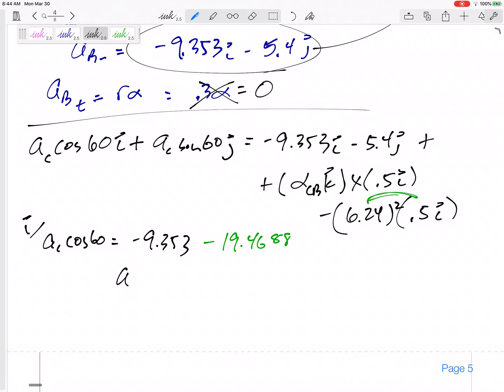There we go. So I can get A, C is negative 57.64 meters per second squared. And then my J equation, A, C, sine 60, equals negative 5.4. All right, now this one,